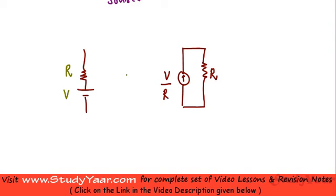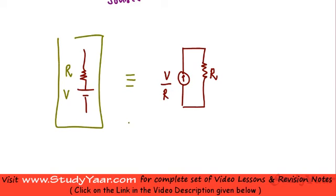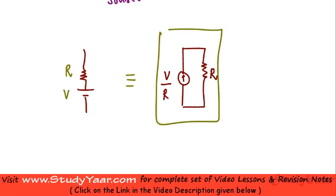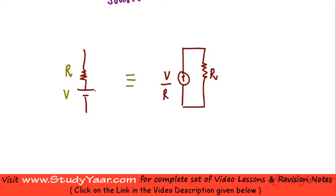So this is equivalent. Anywhere you see this you can just replace that part with this part. Just realize that the polarity and direction of current is important. In this particular case the current is going this way, since this is the positive polarity. Therefore your current source is also going to be in this direction.